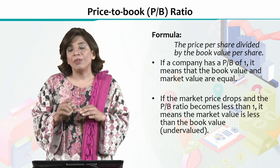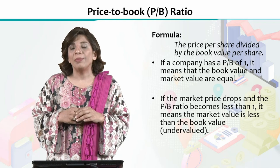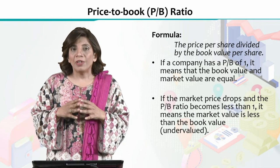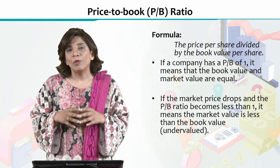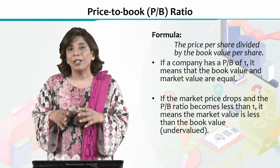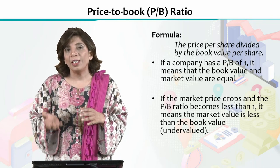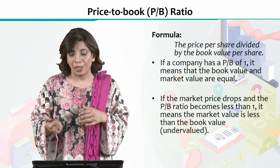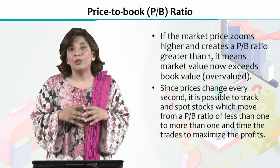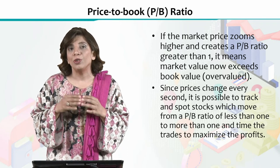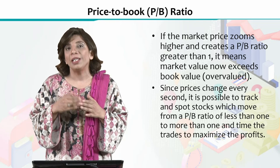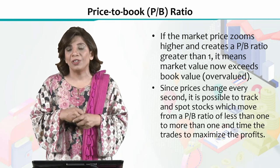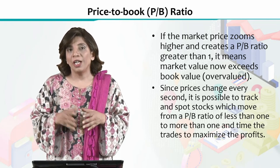If the book value of a share is large as compared to the market value of a share, you will have a ratio of less than 1. When it is less than 1, it means that the share is undervalued — the stock market is pricing the share lower than what the financial statements suggest. This implies that investor sentiment or investor optimism is not favorable for this particular company, despite it having a strong position in the financial statements.